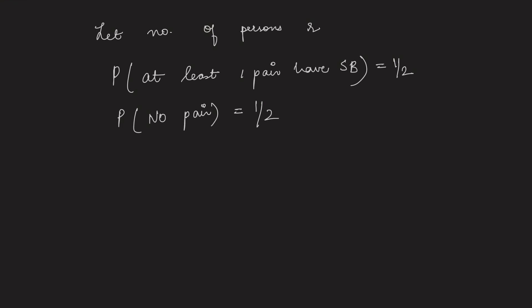Now let's consider these r persons. First person has n choices, n are the number of days in a year. Second person, if there is no pair of matching, has n minus 1 choices of selecting his birthday. Third person has n minus 2 choices and so on till rth person has n minus r plus 1 choices.